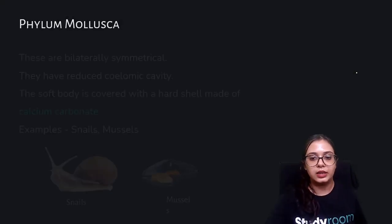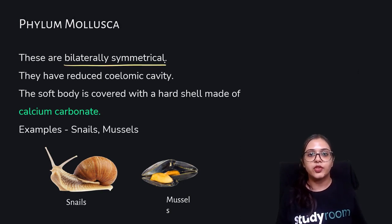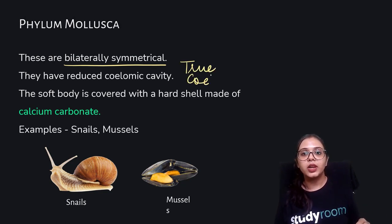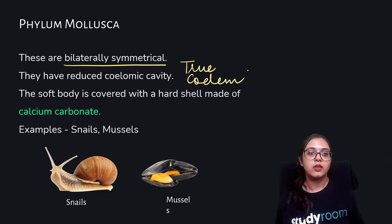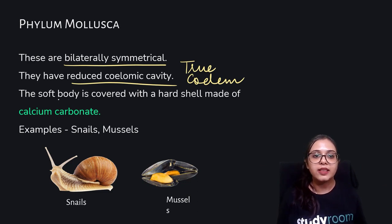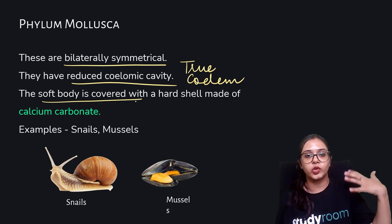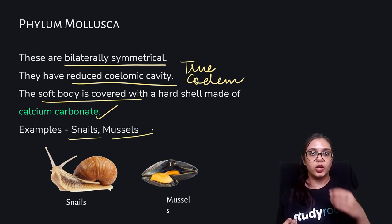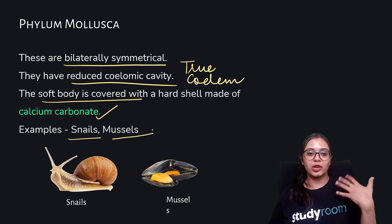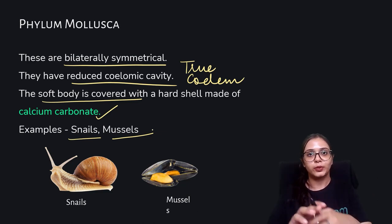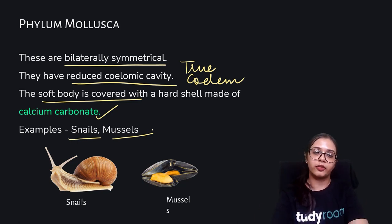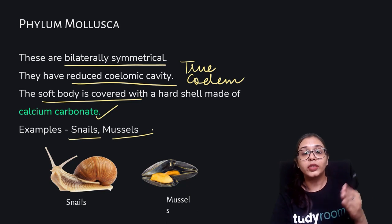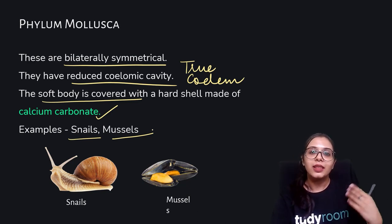Finally in this part we have the phylum Mollusca. These are also bilaterally symmetrical, but the coelomic cavity here is reduced — the true coelum is present but not well differentiated. The body is very soft and tender, covered with a hard shell made of calcium carbonate. Examples include snails, mussels, and oysters — their actual body lying inside the hard covering is soft. We will learn about Echinodermata and Chordata in the next part.